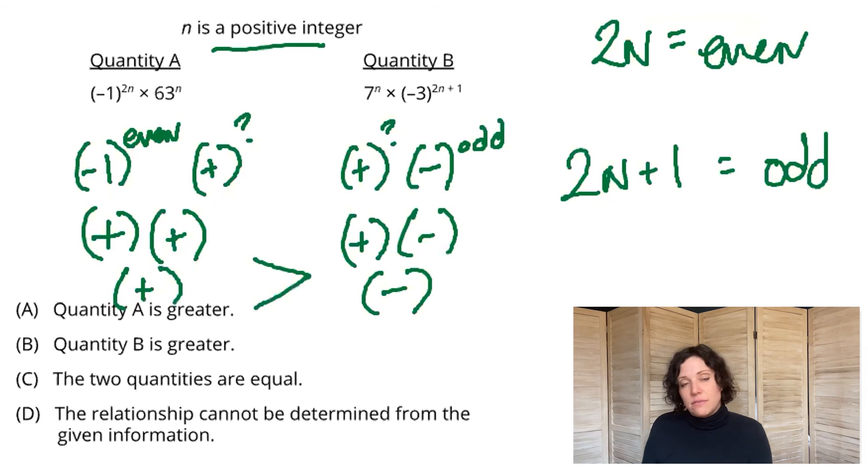So any positive number is bigger than any negative number. Quantity A is bigger than quantity B, and we didn't have to actually do any manipulating with real numbers.